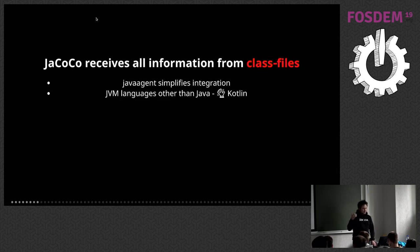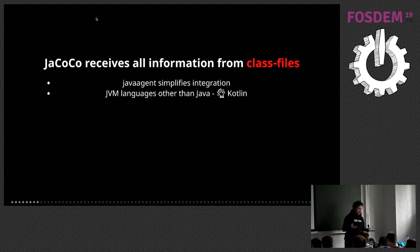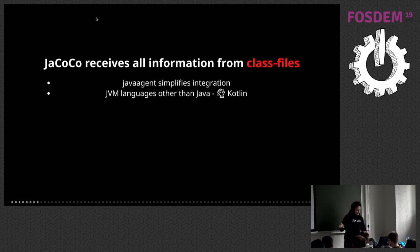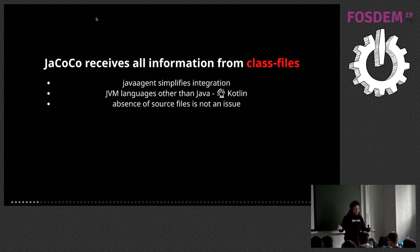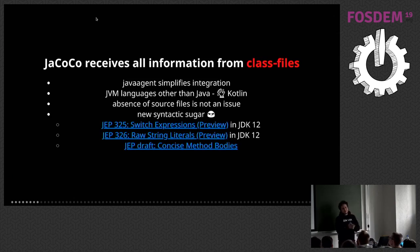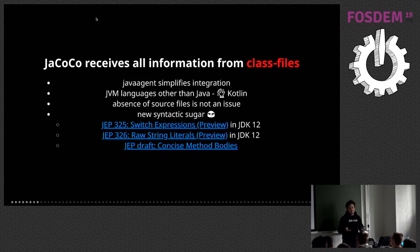This opens the door for us to cover some other languages than Java, because bytecode is the same — so this should work for Kotlin, theoretically, and for Scala, et cetera. Also, absence of source files is not an issue. You can measure code coverage without source files at all. And it helps us cover new syntactic sugar which doesn't change bytecode — for example, switch expressions should be a no-brainer for us to support.